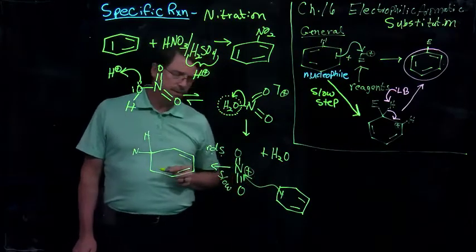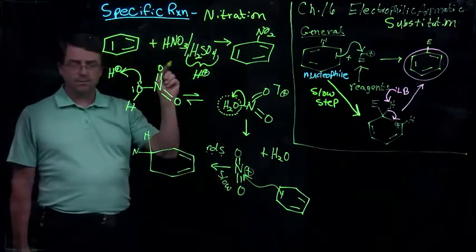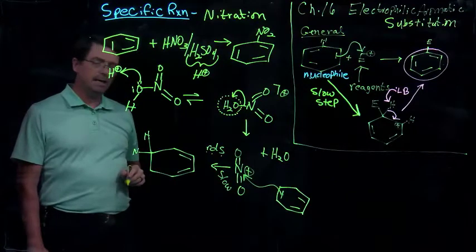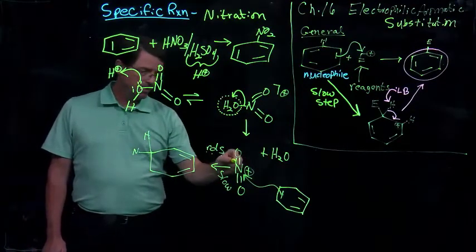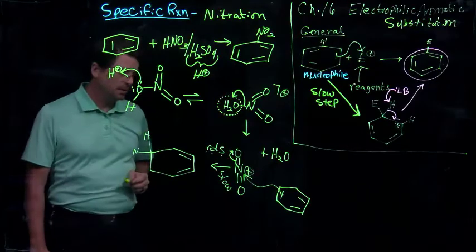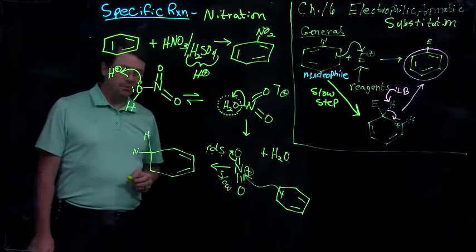Pi bond attacks the nitrogen. Nitrogen, of course, being a first or second row element, can't exceed the octet. I have it drawn with eight electrons. So I have to lose two electrons.